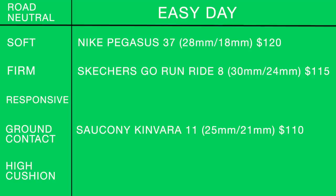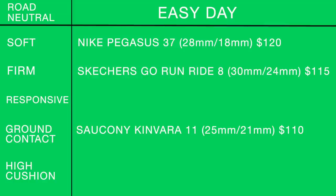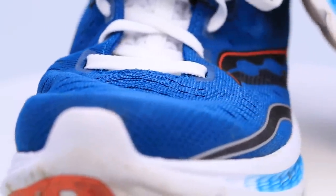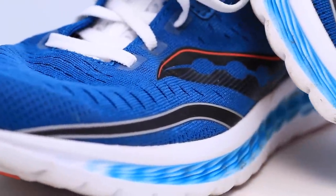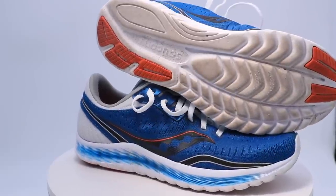For easy day shoe with ground contact feel: the Saucony Kinvara 11 — 25mm heel, 21mm forefoot, $110. A lower stack height with good ground contact feel, but enough give in the midsole that I'm still putting it in the easy day category. I actually really like the Kinvara 11; I was unable to take it to 250 miles not because I didn't like it, but because other shoes bumped it out of the rotation. Love, love, love this shoe.